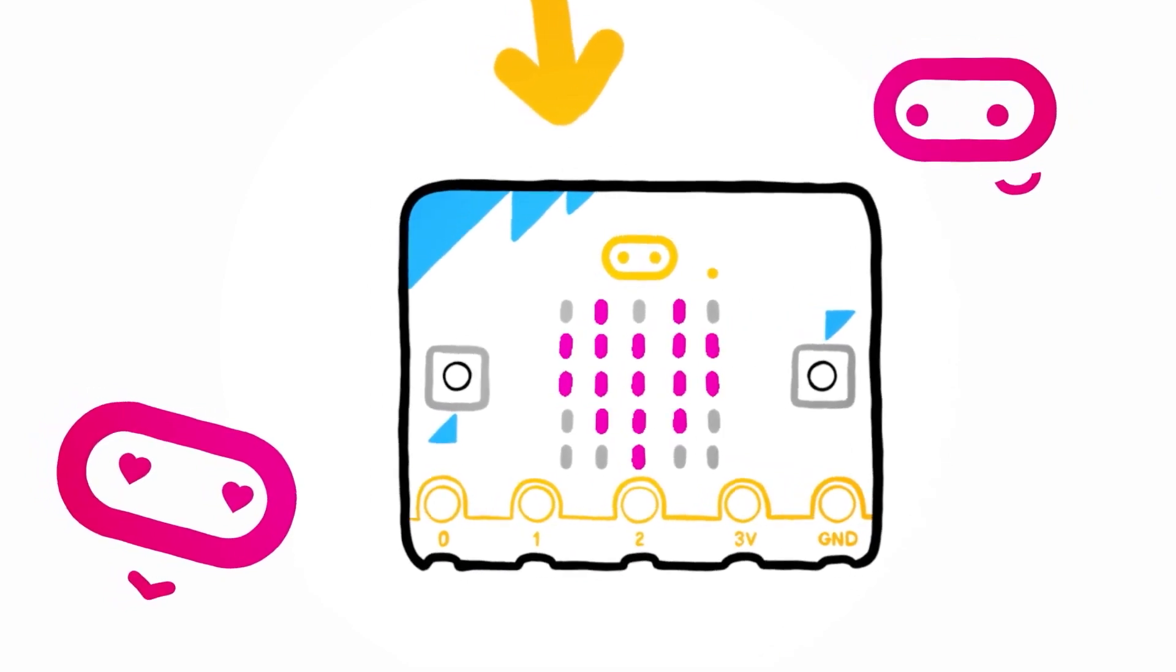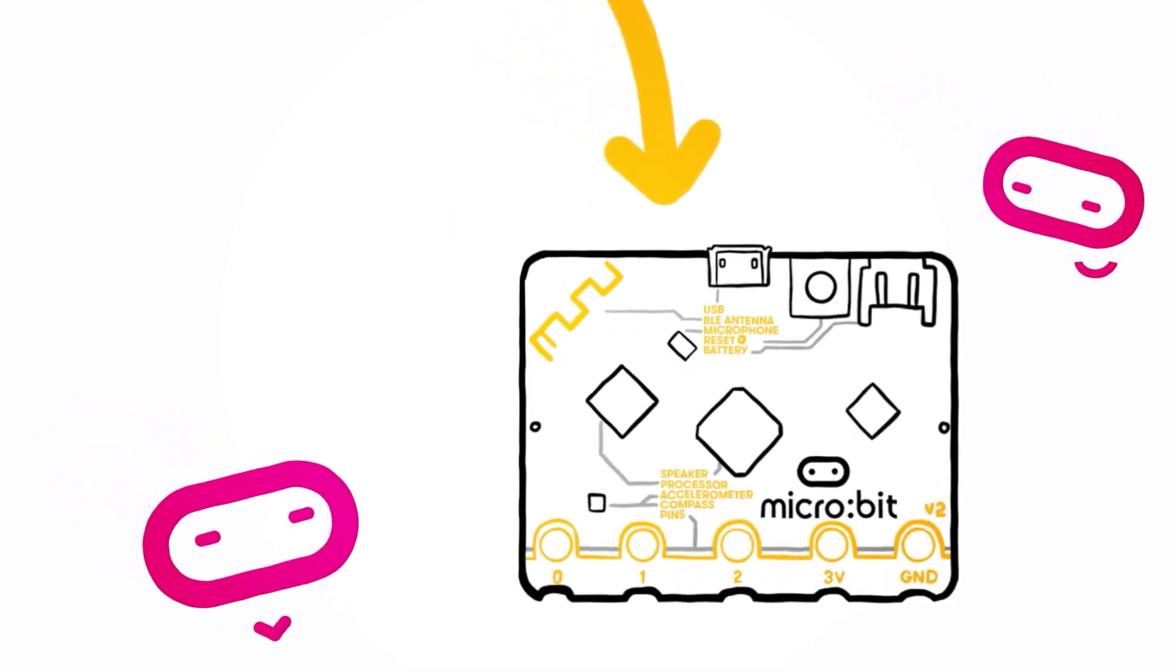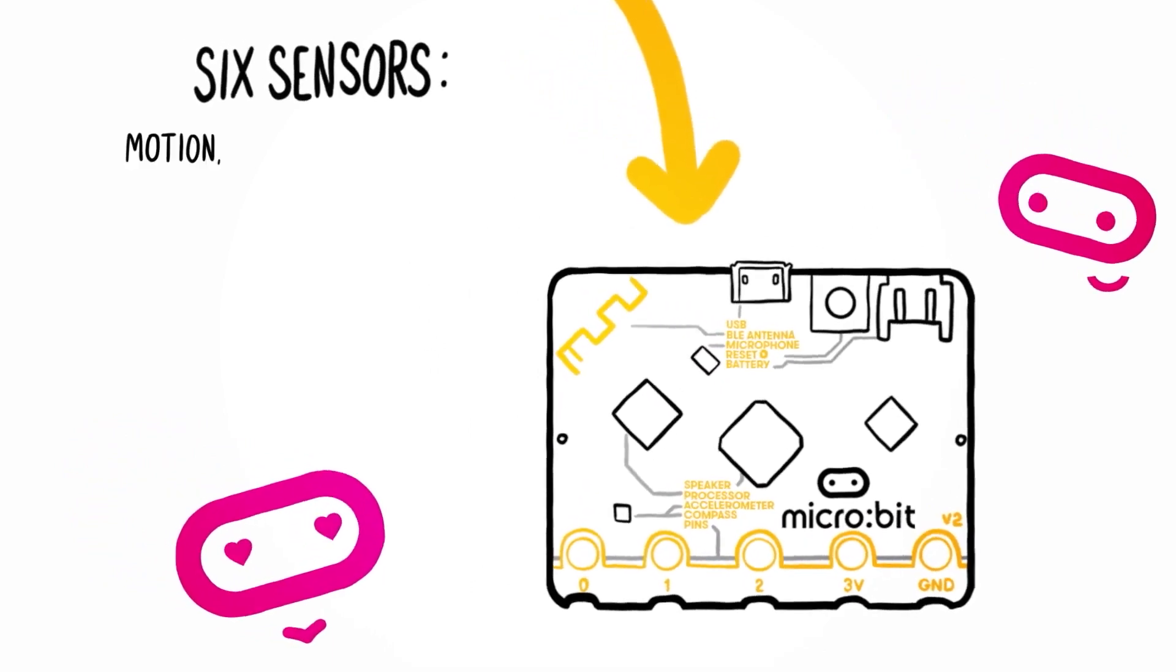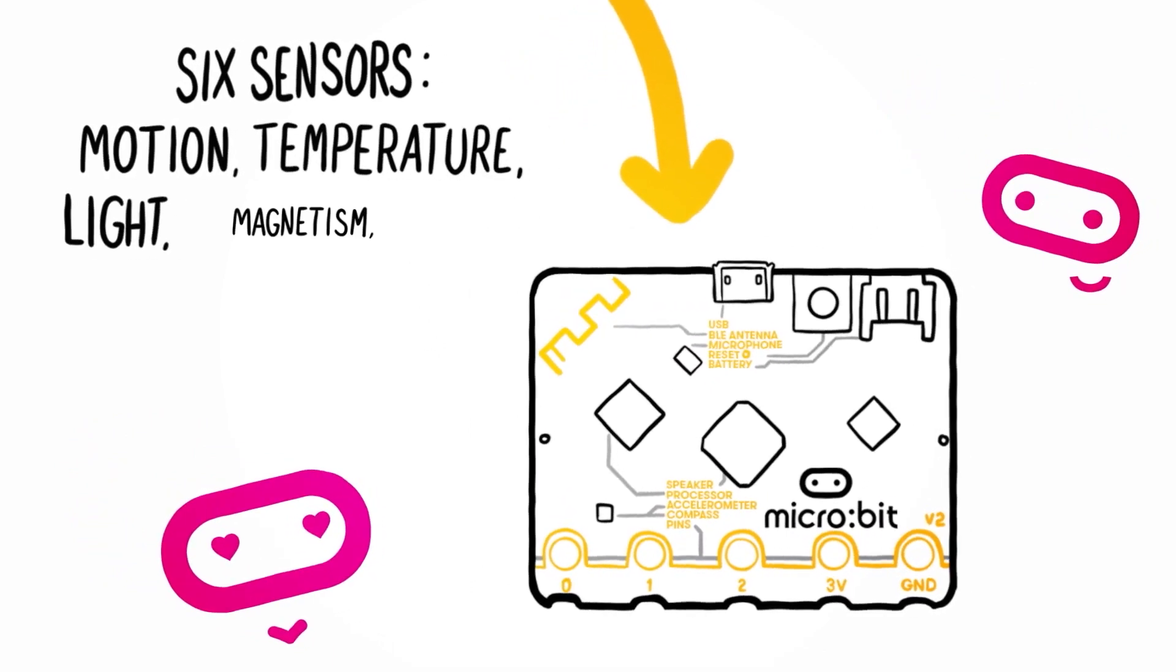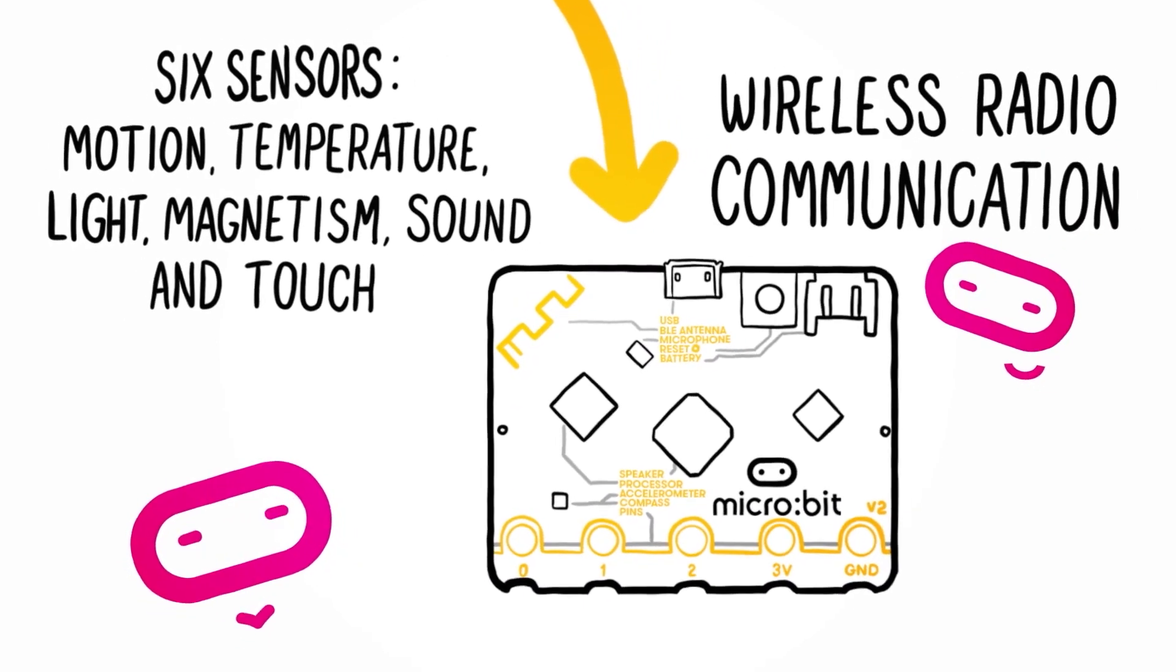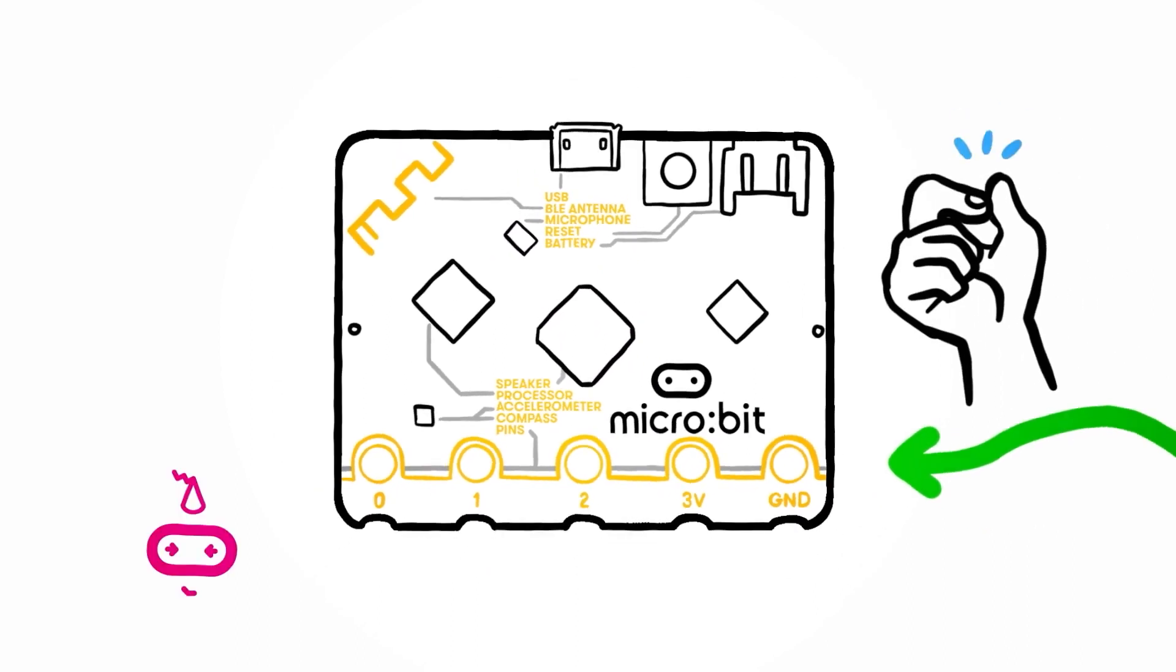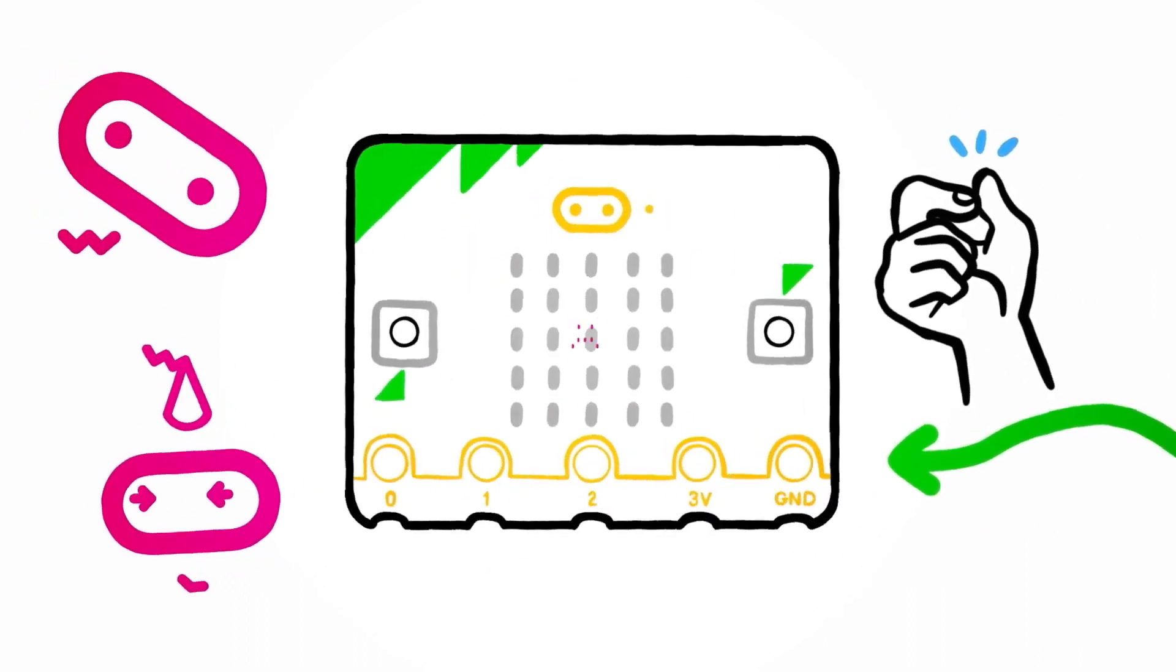Also this week, the microbit foundation has announced a new version of their microbit board. It's essentially the same form factor. They've added a microphone and a speaker and increased the speed of the processor. A power saving mode has been added so that you can power down your project without disconnecting it. As a small design improvement, they've notched the connection pads to make it easier for alligator clips to stay on.